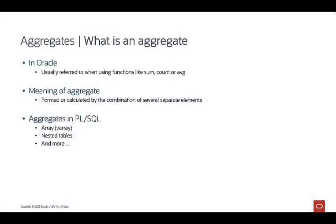Before I continue to explain the new functionality, I want to give you a little bit more information on aggregates. Most people writing SELECT statements might only recognize things like SUM or COUNT as the aggregate functions they use in SELECT, HAVING, or ORDER BY clauses of their query. But these are not the only aggregates in the database. Aggregate basically means a single result formed or calculated by the combination of several separate elements, so as long as there is a single result that contains a combination of several elements, it is called an aggregate.